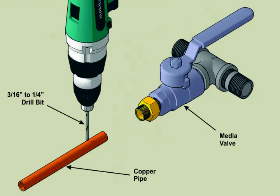Drill a series of 3/16ths or quarter inch diameter holes perpendicular to each other down the length of the tube. Be sure to clean up any burrs left behind from drilling.